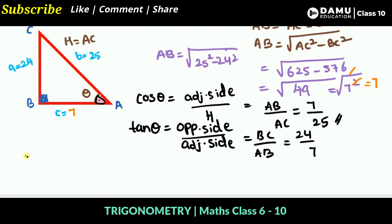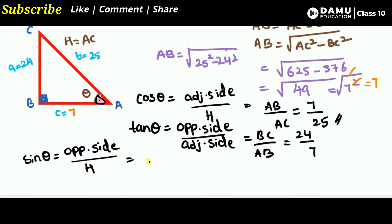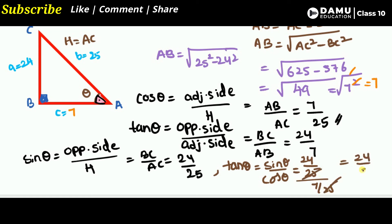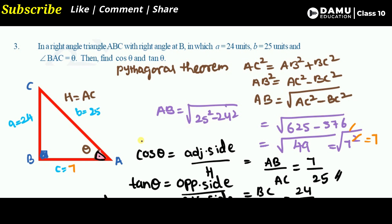We can also find sin theta: sin theta equals opposite side divided by hypotenuse, which is BC/AC = 24/25. We can verify tan theta using sin theta divided by cos theta: (24/25) ÷ (7/25) = 24/7, which confirms our answer. Thank you for watching — please subscribe and share with your friends and family.